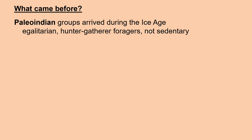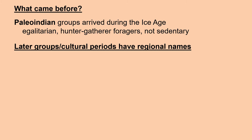So what came before these civilizations? Paleo-Indian groups arrived during the Pleistocene, or Ice Age, and they were egalitarian hunter-gatherer foragers and not sedentary. According to our best information so far, they likely arrived along the west coast by boat initially, and later by walking.